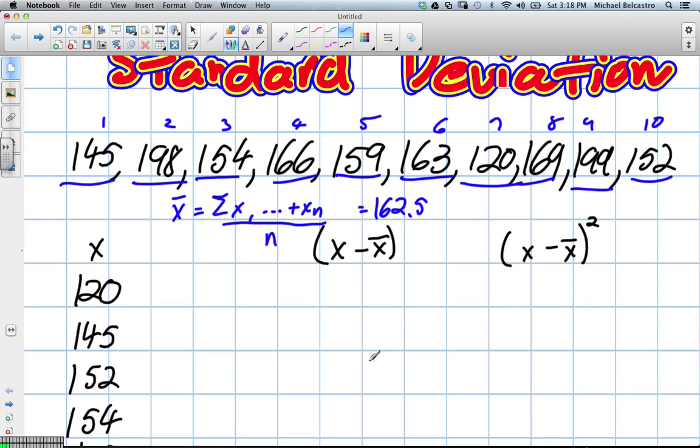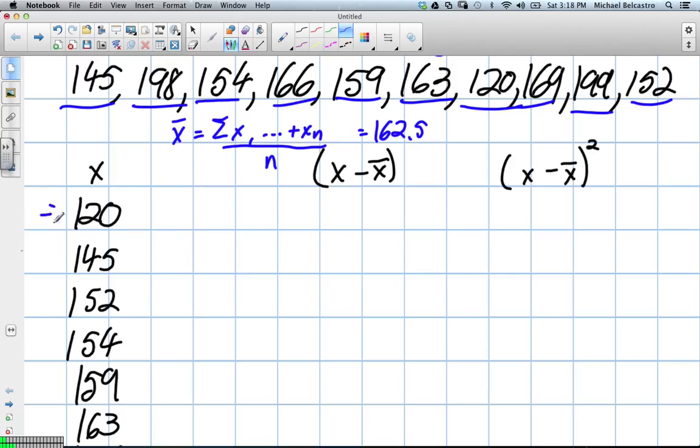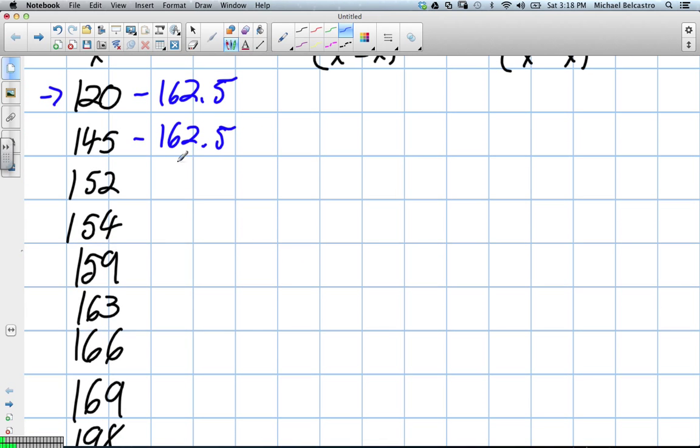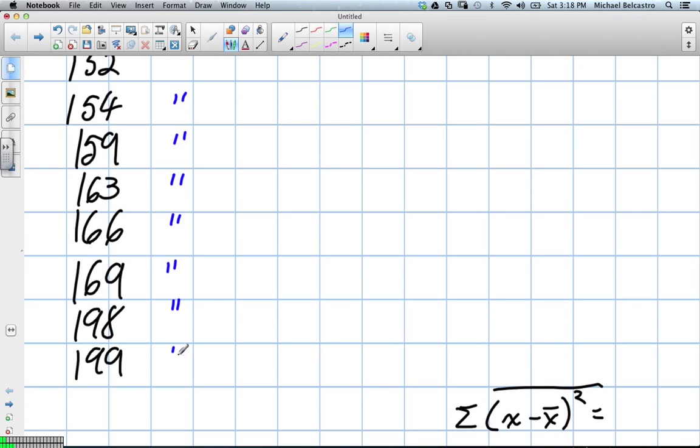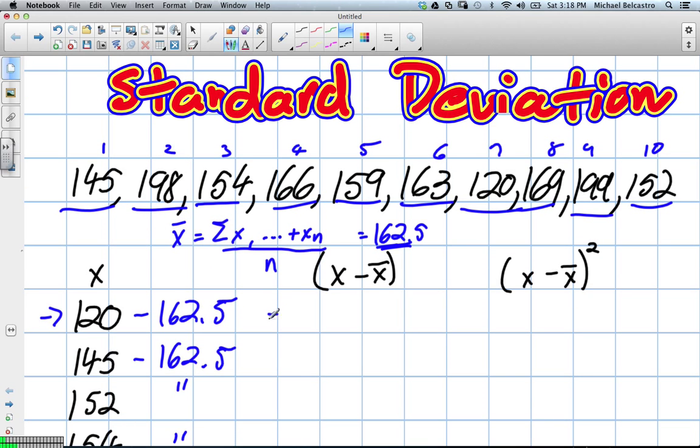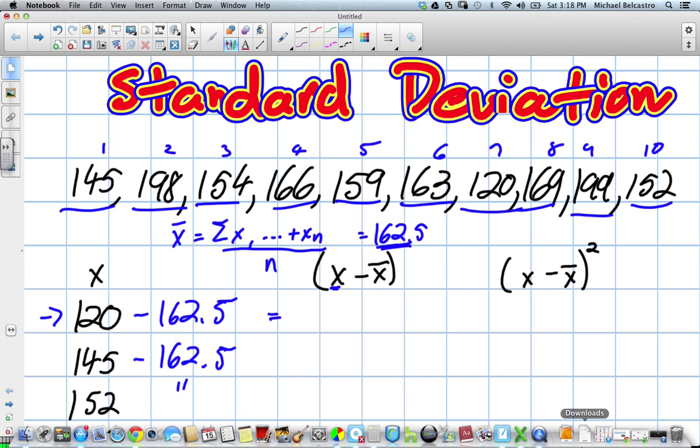The very next step to standard deviation is we want to take all of the data, so I've set it up in columns, and we want to subtract it from the mean. So we're going to subtract all of these from our 162.5, and I'm just going to use quotations to mimic the same thing over and over. We will continuously do that to get a value. And our value, I've written it under x minus x bar. x being the data, x bar being the mean. So we're going to have to do this individually.